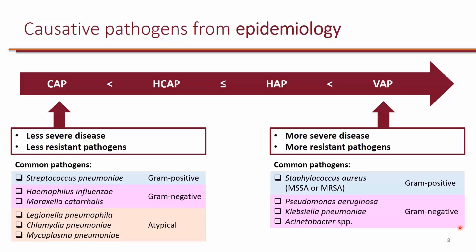The organisms you want to target empirically are Staphylococcus aureus — which could include methicillin-susceptible Staphylococcus aureus or methicillin-resistant Staphylococcus aureus — as well as gram-negatives such as Pseudomonas aeruginosa, Klebsiella pneumoniae, and Acinetobacter species. These organisms are usually more likely to be drug-resistant.